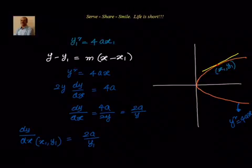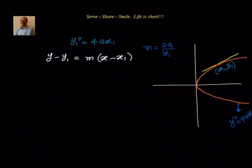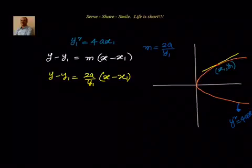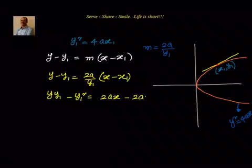So slope m equals 2a divided by y1 at that particular point. We know the slope and we know the point, so we write down y minus y1 is equal to m, which is 2a by y1, into x minus x1. Doing cross multiplication and simplifying, we get yy1 minus y1 squared is equal to 2ax minus 2ax1.